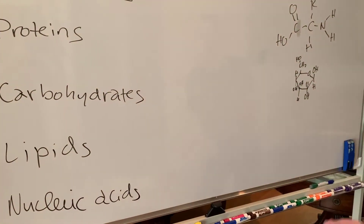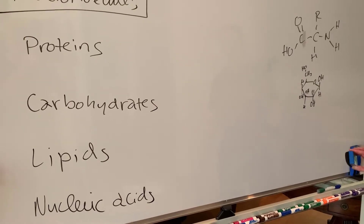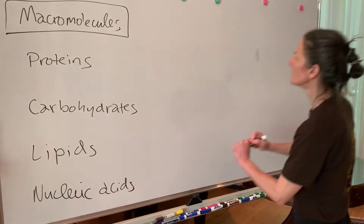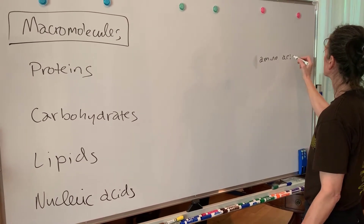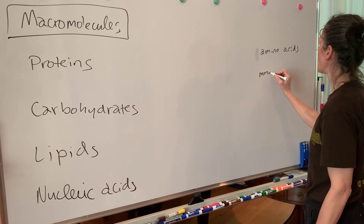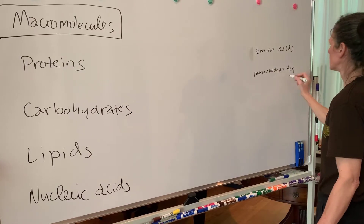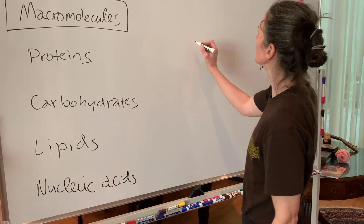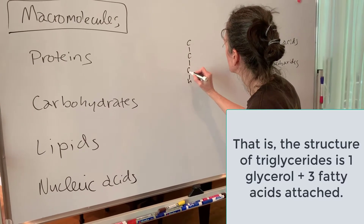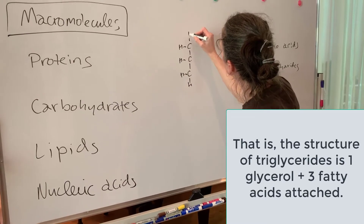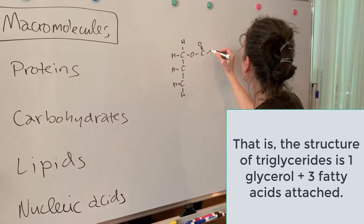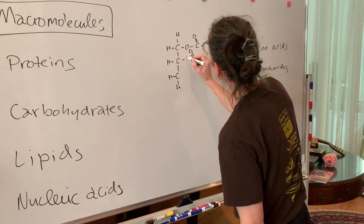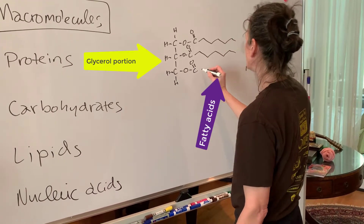Lipids are our fats — these could be triglycerides or things like cholesterol. We're specifically going to look at triglycerides. A triglyceride has a glycerol molecule with fatty acids attached via linkages, created through dehydration synthesis. Some fatty acids are saturated — meaning every available carbon has hydrogen atoms and no double bonds — or unsaturated, which have a double bond that usually introduces a kink in the molecule.